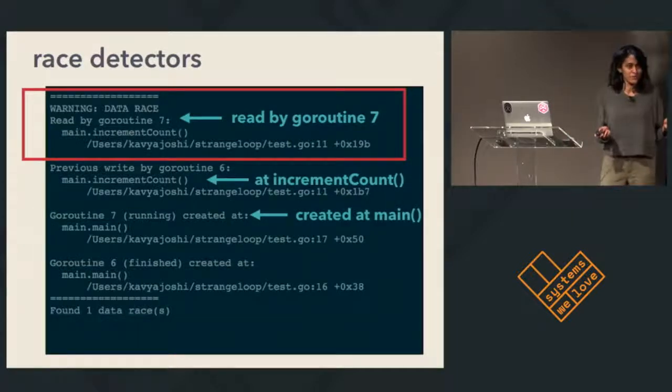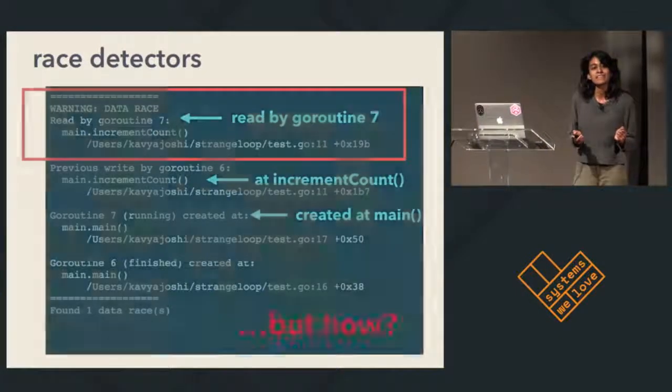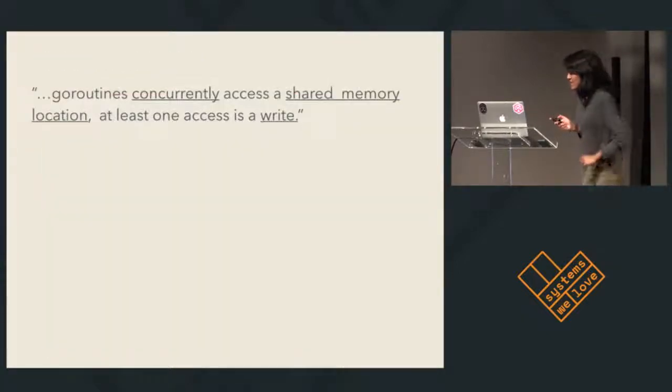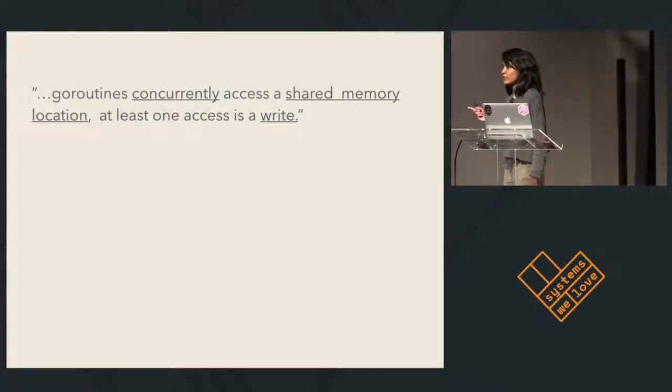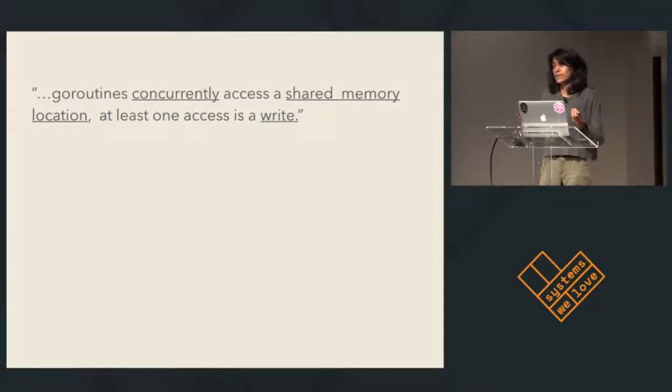To implement happens-before detection — to detect data races — we need to detect concurrent memory accesses. This is the definition: it requires two or more threads to concurrently access a memory location. So the question is, how do we determine concurrent memory accesses? Concurrent sort of means at the same time, but what does at the same time even mean? Well, we can stare really hard at the code, or we can be smarter. We can re-ask the question to be a question that we know the answer to.